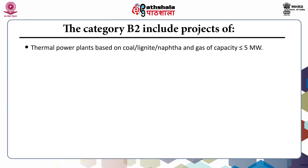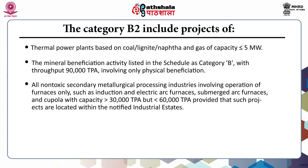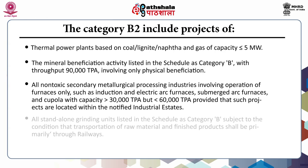Category B2 includes: Number one, thermal power plants based on coal, lignite, naphtha and gas of capacity equal to or less than five megawatt. Number two, mineral beneficiation activity listed in the schedule as Category B with throughput of ninety thousand tonnes per annum involving only physical beneficiation. Number three, all non-toxic secondary metallurgical processing industries involving operation of furnaces only — such as induction furnaces, electric arc furnaces, submerged arc furnaces, and cupola — with capacity more than thirty thousand tonnes per annum but less than sixty thousand tonnes per annum, provided such projects are located within notified industrial estates.